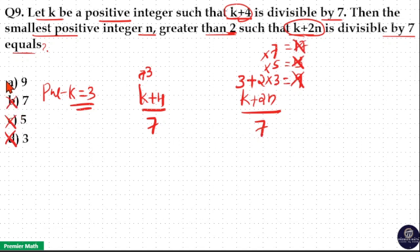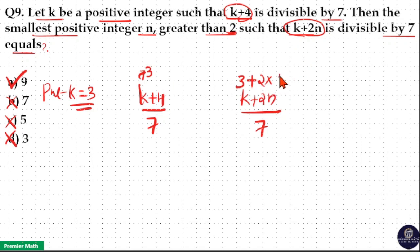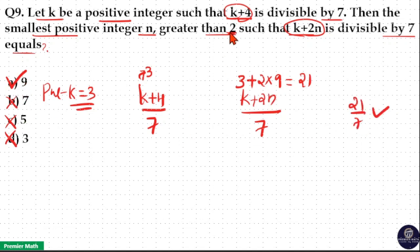So option a is the answer. With n equals 9, we get 3 plus 2 into 9 equals 3 plus 18 equals 21, and 21 is divisible by 7. So the smallest value of n greater than 2 is 9, and option a is the answer.